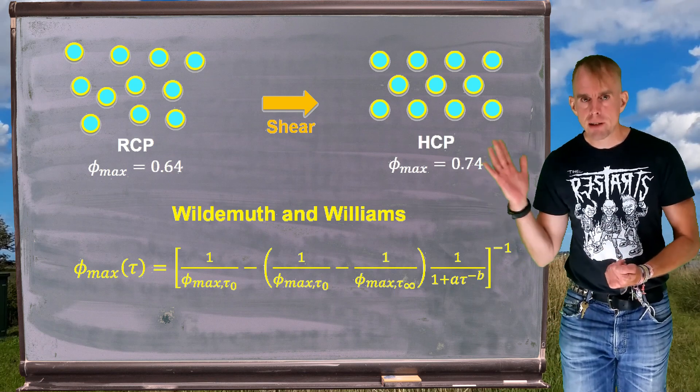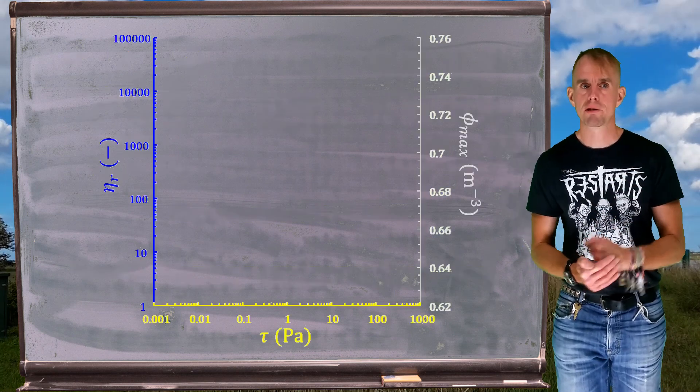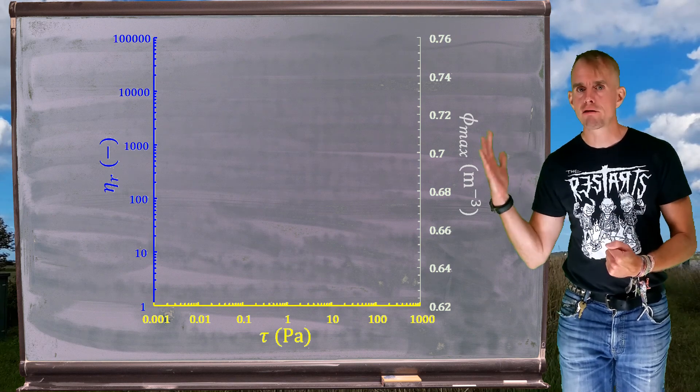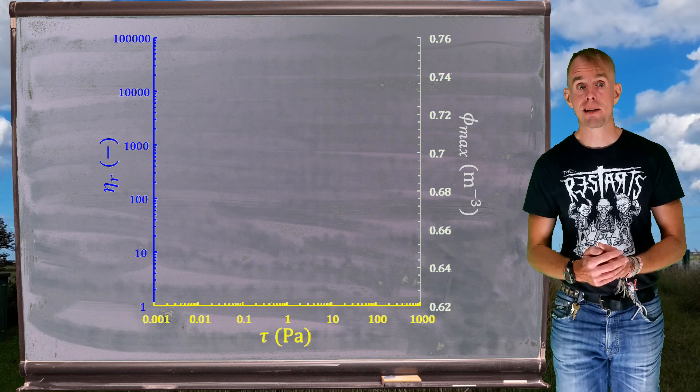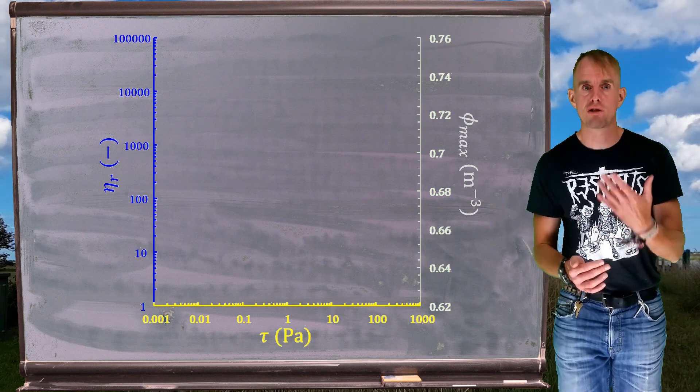So let's have a look at a plot. Here on the board are two y-axes and an x-axis. The primary y-axis is our relative viscosity. Our secondary y-axis is our maximum packing fraction. Both of these parameters are going to be plotted as a function of shear stress.